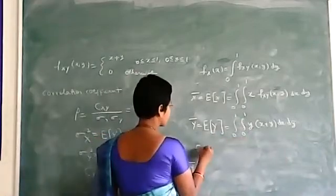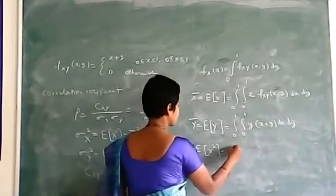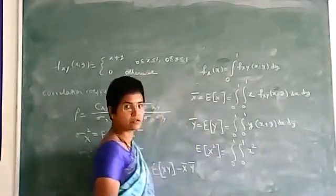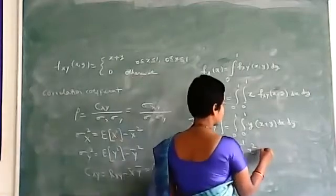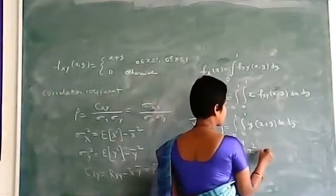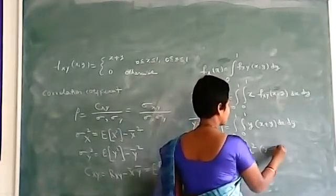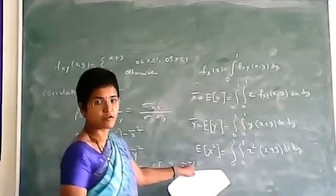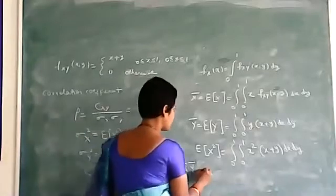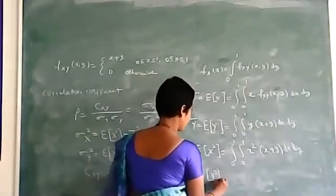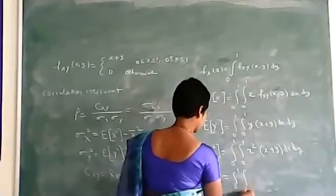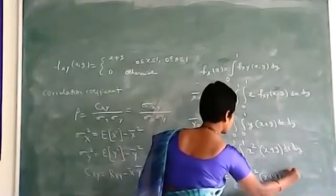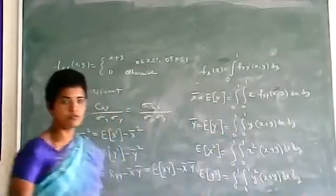For the expected value of x squared, we substitute x squared into the integrand: integral from 0 to 1, integral from 0 to 1 of x squared times (x plus y) dx dy. Similarly, the expected value of y squared is: integral from 0 to 1, integral from 0 to 1 of y squared times (x plus y) dx dy. Students, go ahead and evaluate these integrations.